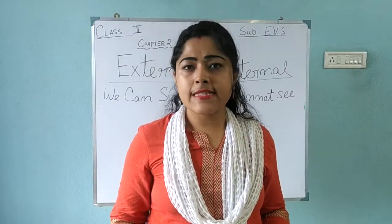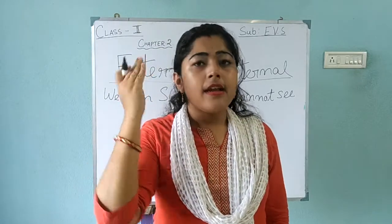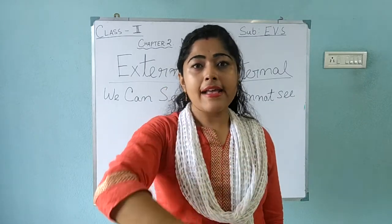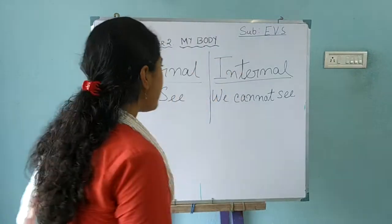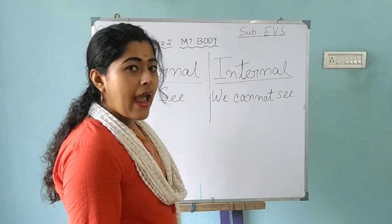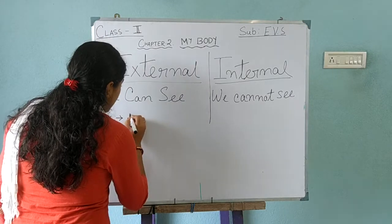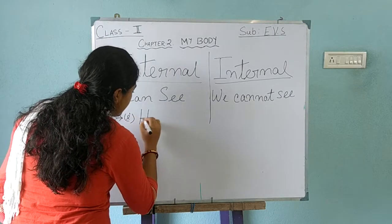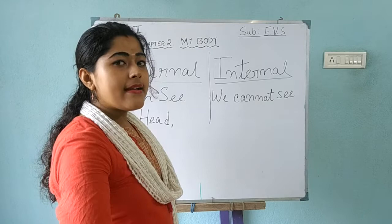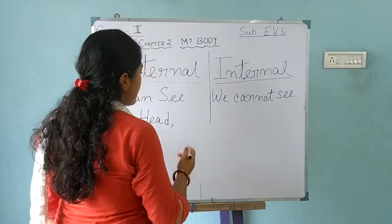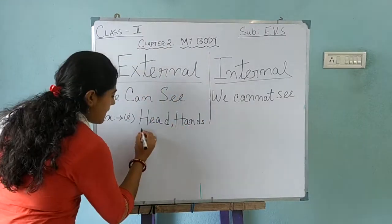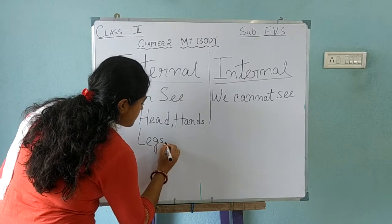The example of external organs — you all know which we can see. We can see: head, eyes, nose, mouth, ears, lips, hands, legs, toes. So take your notebook and copy it. First example: head. Say with me and think about it — what are your external organs? Head, hands, legs, fingers.